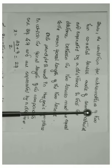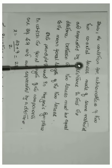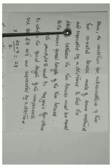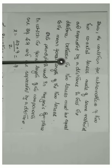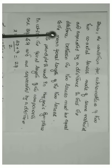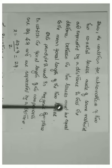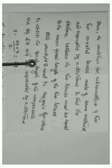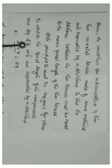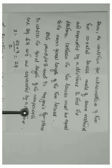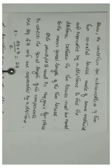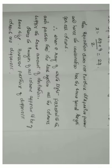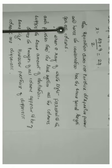Thus, the condition for achromatism of two thin coaxial lenses made of the same material and separated by a distance is that the distance between them must equal the mean focal length of the two lenses. The same principle is used in Huygens' eyepiece, where the focal lengths of the components are 3F and F, giving X = (3F + F)/2 = 2F. This equation does not involve dispersive power, so the combination has the same focal length for all colors.